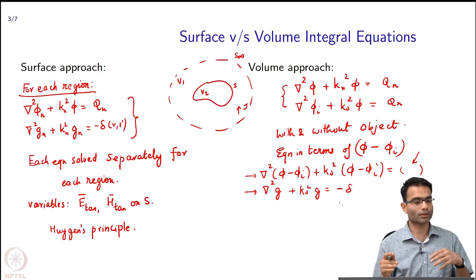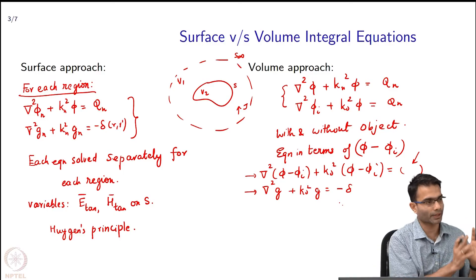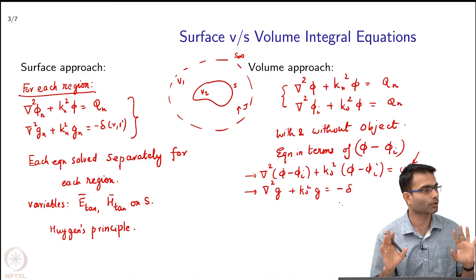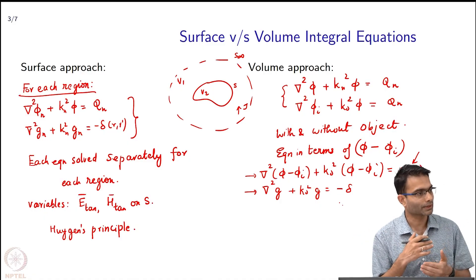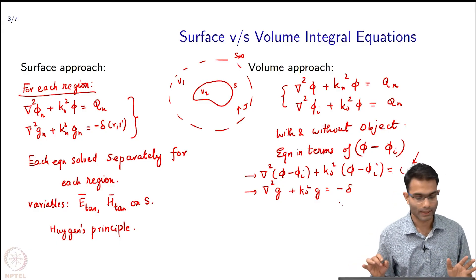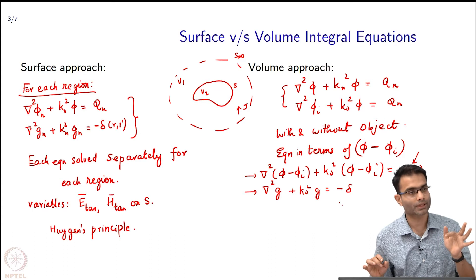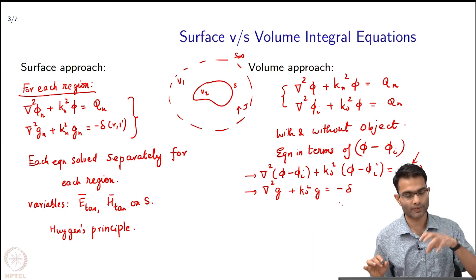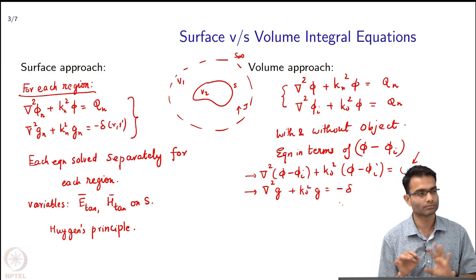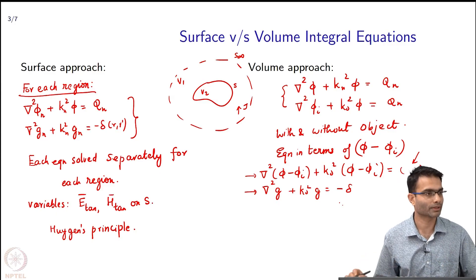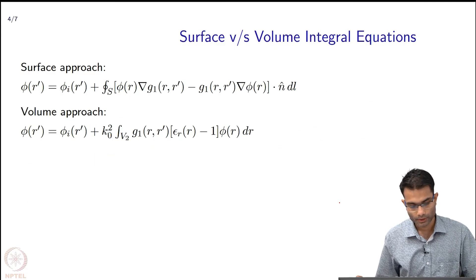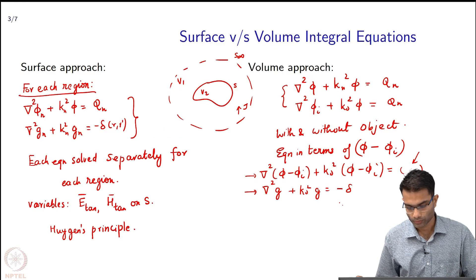You notice the slight difference in approach - it started right in the beginning. In the surface integral approach I went for each region separately, solved separately, subtracted. Here the entire volume is considered with and without object and the difference is taken, and then I use my Green's function. The Green's function is used in both cases.